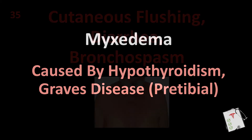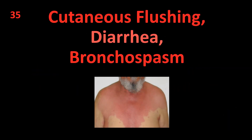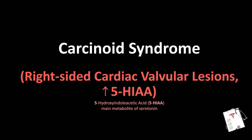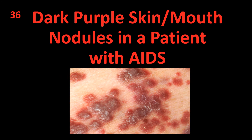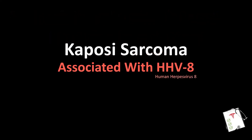Number 35: Cutaneous flushing, diarrhea, bronchospasm. Answer: Carcinoid syndrome — right-sided cardiac valvular lesions, increased 5-HIAA. Number 36: Dark purple skin or mouth nodules in a patient with AIDS. Answer: Kaposi sarcoma — associated with human herpesvirus 8.